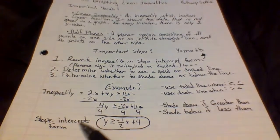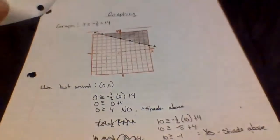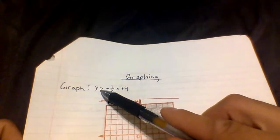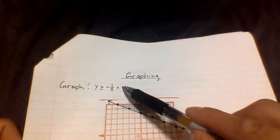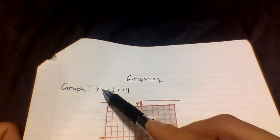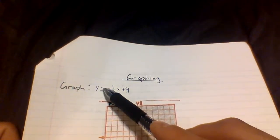I am now in slope-intercept form and can begin to graph. My equation is y is greater than or equal to negative one-half x plus 4. I am using a solid line because the inequality is greater than or equal to, which determines we use a solid line.